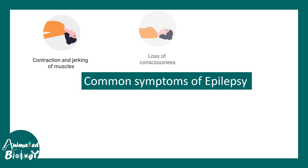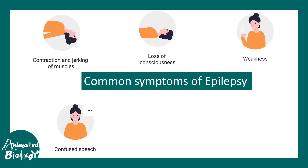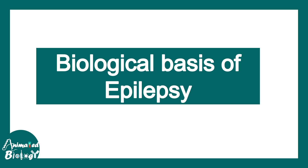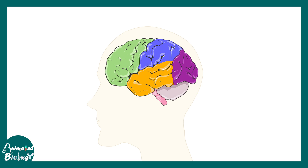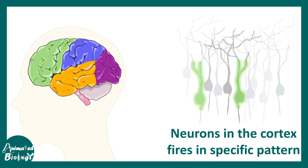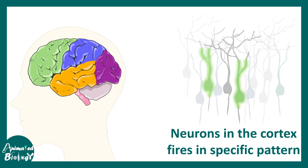Symptoms also include loss of consciousness, sometimes weakness, anxiety, confused speech, and staring. Now let's understand the biological basis of epilepsy. In the brain, the neuronal circuitry functions in a specific pattern — all neurons are not firing at once; they fire in a rhythmic fashion.